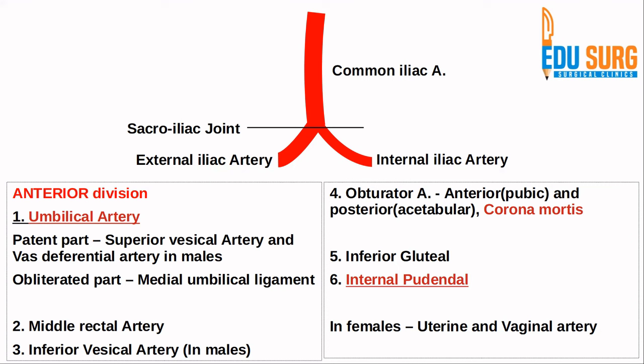The internal pudendal artery is very important and a commonly asked question — we will see it in detail shortly. Another important branch is the obturator artery, which we have discussed in our video on hernia in relation to the corona mortis. The obturator artery and vein have anterior and posterior branches: the anterior branch is also known as the pubic branch at the superior pubic ramus, and the posterior branch is known as the acetabular branch.